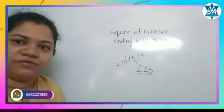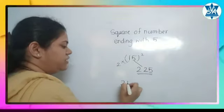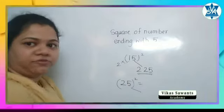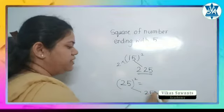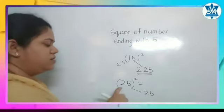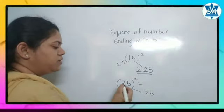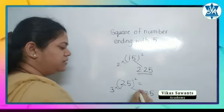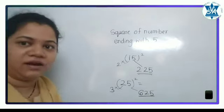Let us try for 25 square. Again, the square of 5 is 25, right? And 2—what is the consecutive number after 2? It is 3. Multiply them: 2 multiplied by 3 is 6, and that is your answer.